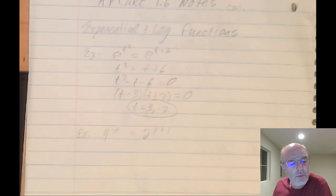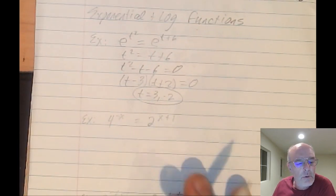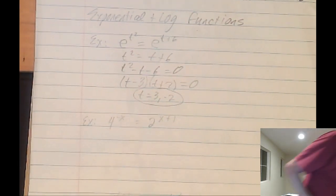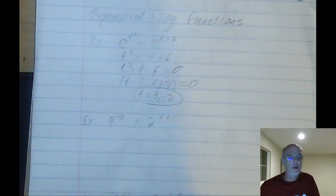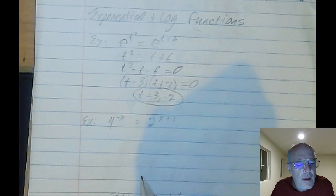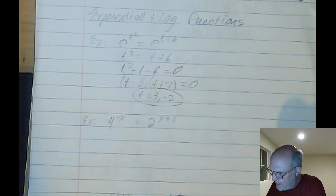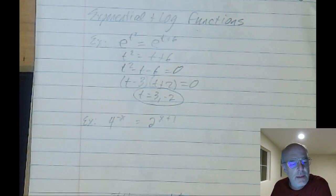Okay, so this one here, we got 4 to the negative x equals 2 to the x plus 1. Does that help? Does that make it easier to see? You guys can tell me which one's better. All right, so when the bases are different, you have to make the bases the same.